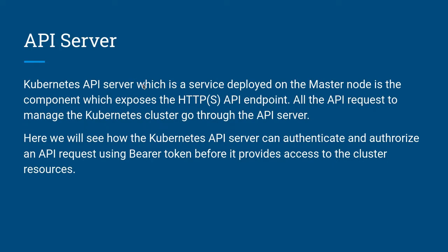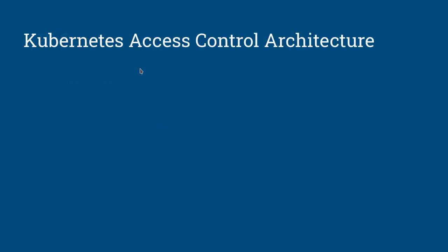In this video, we will see how we can use the Kubernetes API — how we can authenticate to the Kubernetes API server using a bearer token to access the cluster resources. Let us look at a high-level architecture diagram, which I got from the Kubernetes documentation.